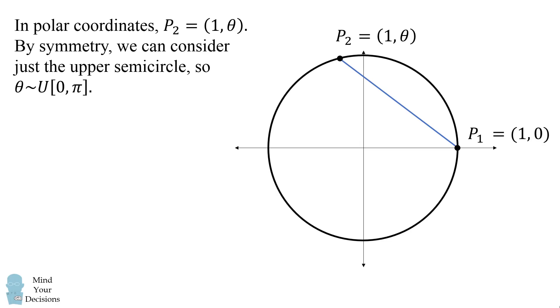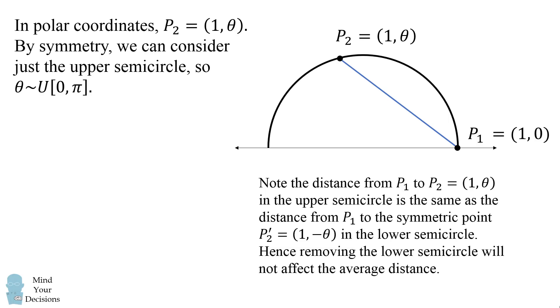Furthermore, by symmetry we can consider just the upper semicircle. So we only consider theta between 0 and pi. Why can we do this? Notice the distance from p1 to p2 in the upper semicircle will be the same as p1 to the symmetric point p2' located at 1, negative theta in the lower semicircle. Hence, removing the lower semicircle will not affect the average distance because we're just removing half of the points which will have the same average as the upper semicircle.